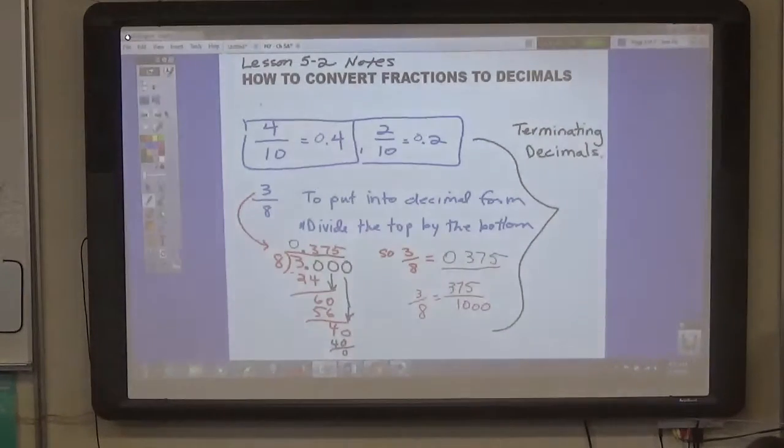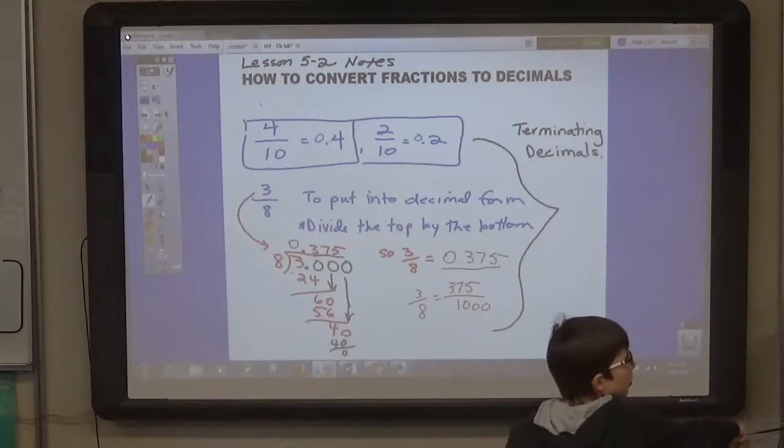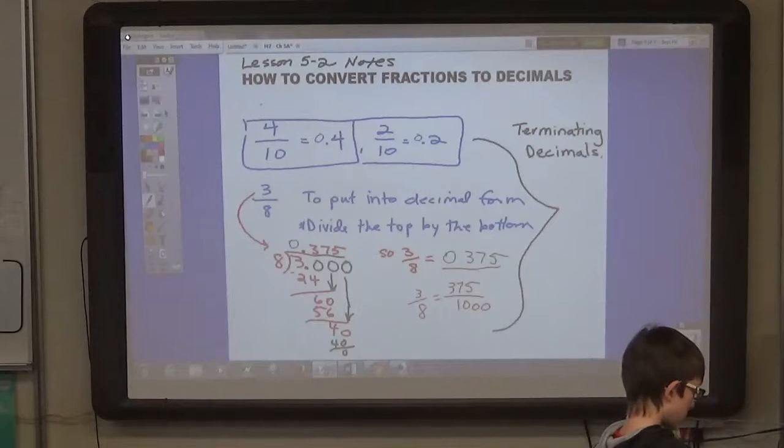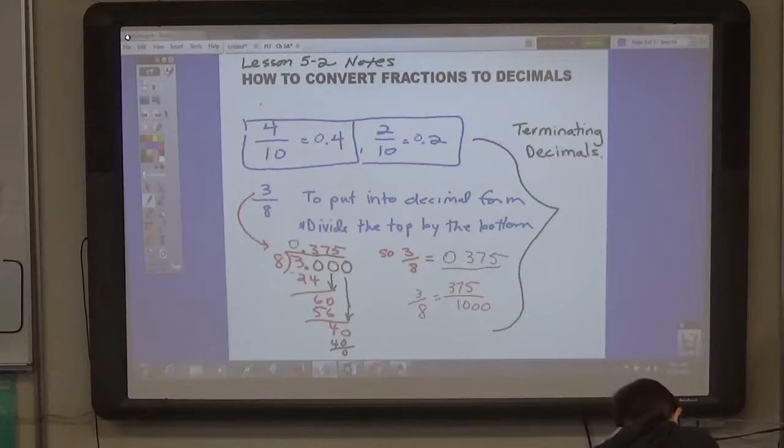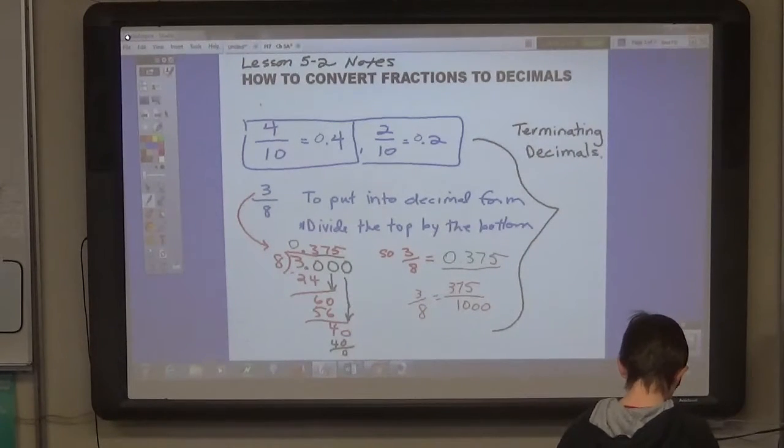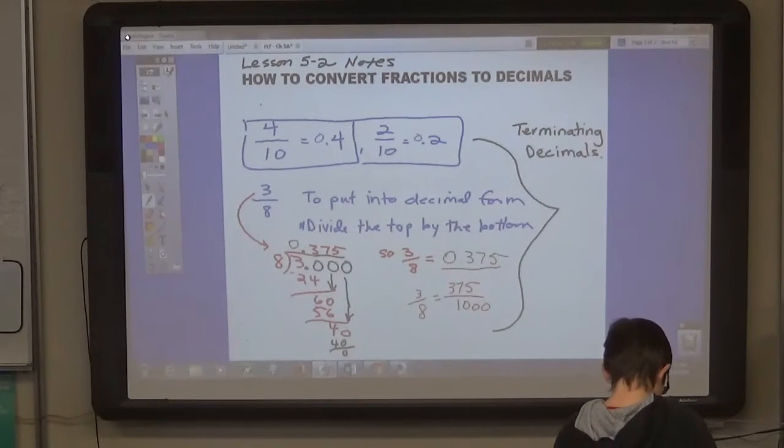So for tomorrow, if you go to your worksheet, I want you to do two through twenty evens, starting with decimals, converting decimals to fractions in simplest form. Remember that if the decimal is bigger than one, so for example, number four is two and thirty-four hundredths, that's going to be a mixed number. Two, and then the fraction, thirty-four hundredths, reduced to seventeen-fiftieths. And I want you to put one in order from least to greatest. And then tomorrow I'm going to show you how to work with repeating decimals.